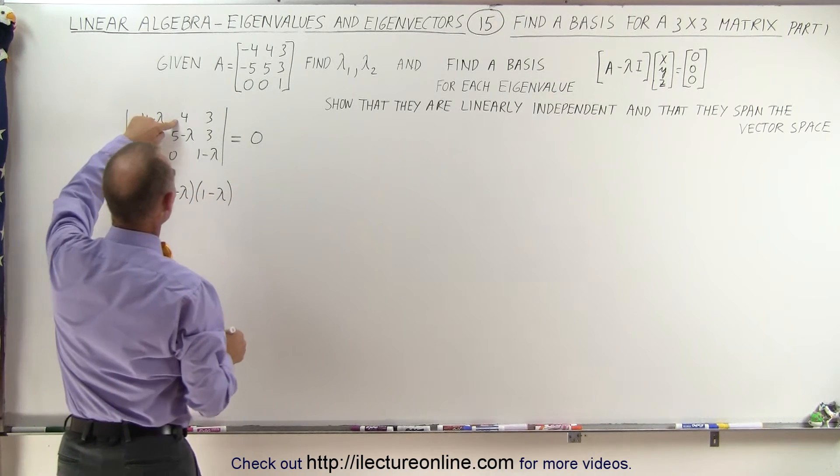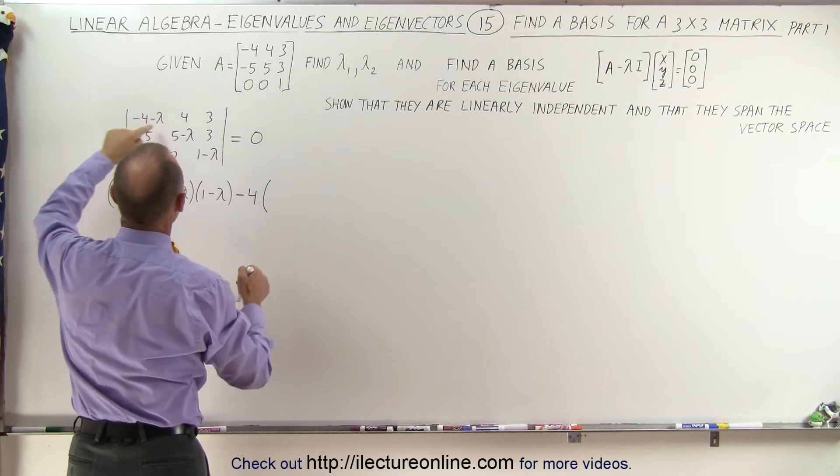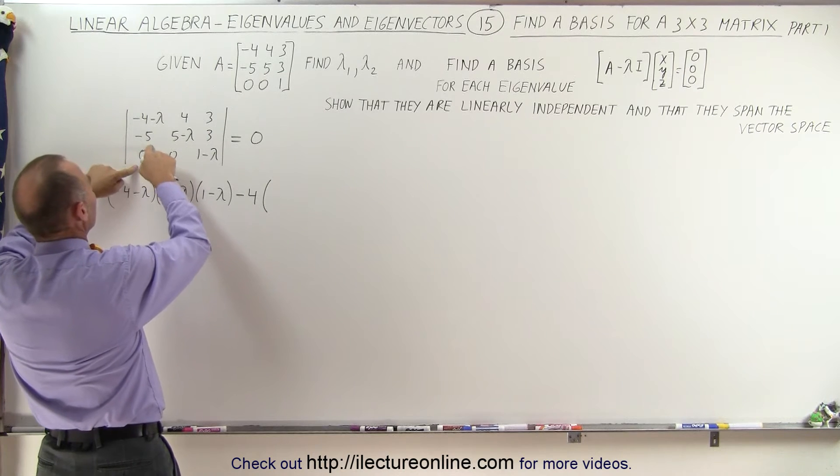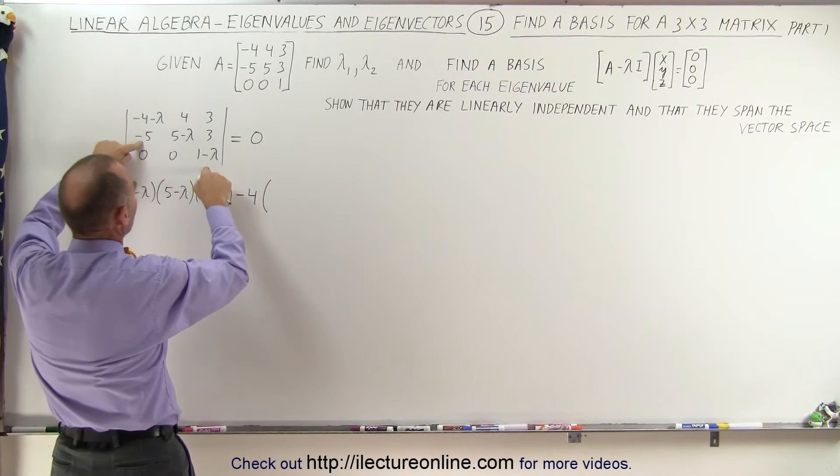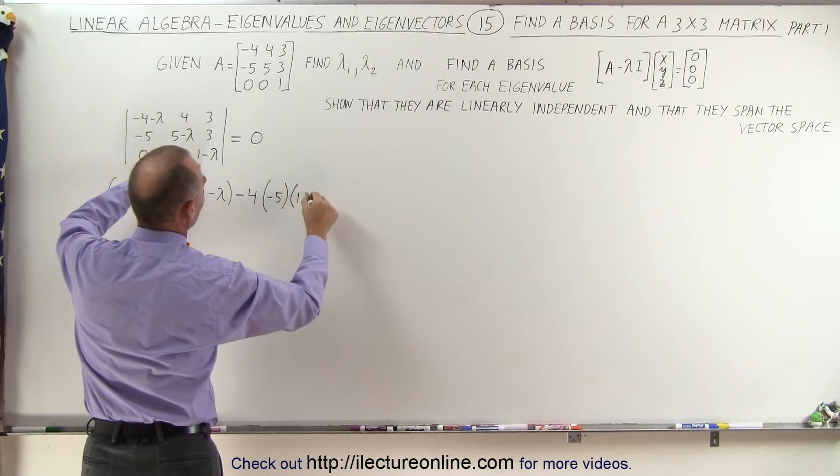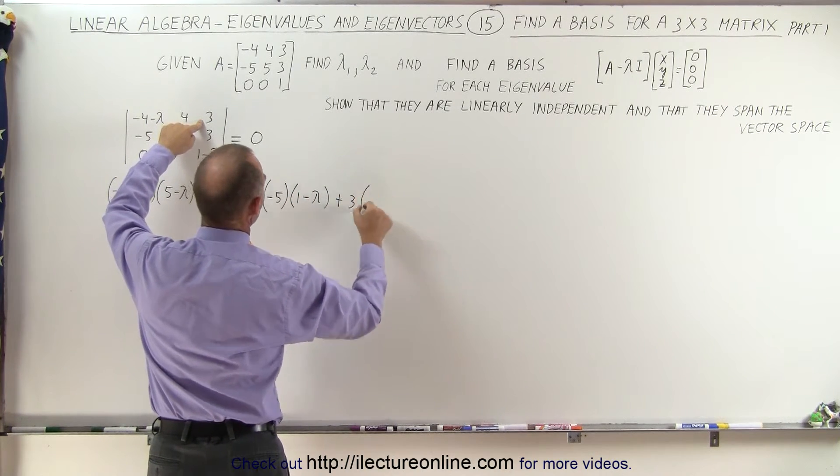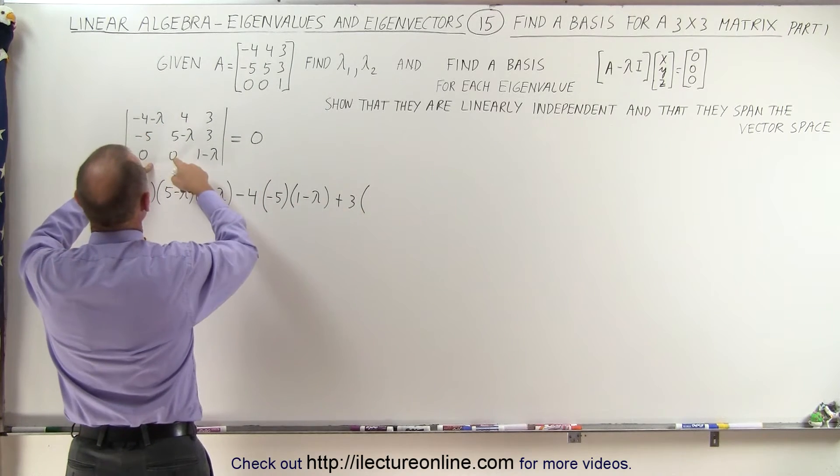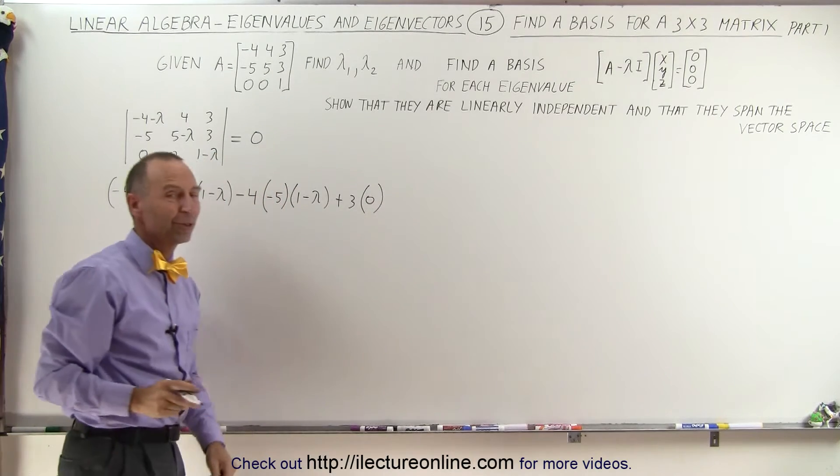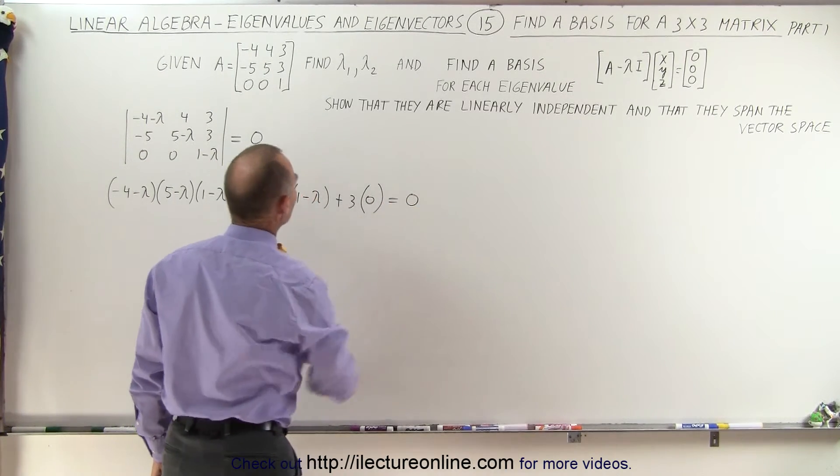Now we take the second element. We have to take the negative of the second element and we're going to multiply it times the product of those two minus the product of those two. Again there's a 0 here so simply the product of these two which is minus 5 times 1 minus lambda. And finally we take this element plus 3 times the product of those two minus the product of those two which is 0 so that drops out. So it's not quite as bad as we thought and then set that of course equal to 0.